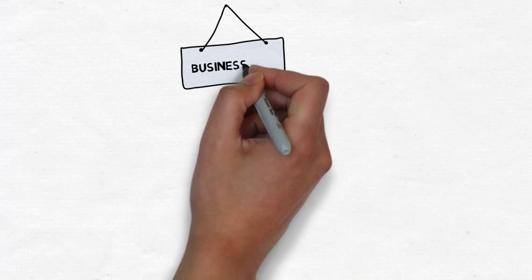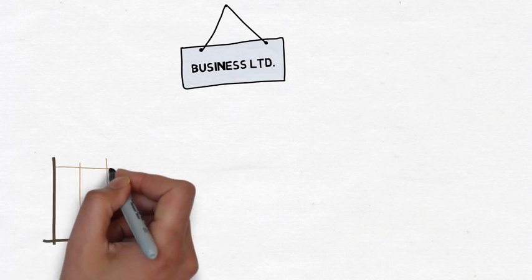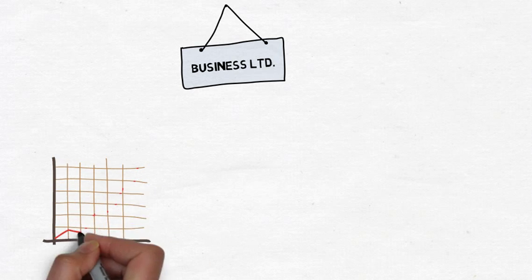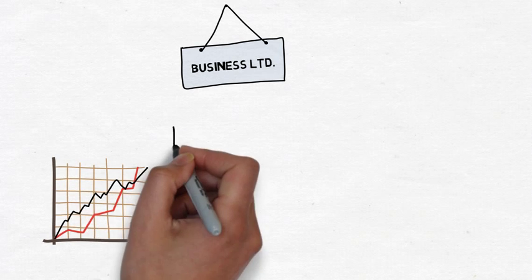Businesses are also measured in the same way. Financial KPIs such as revenue and equity ratio tell us how well a company is doing.